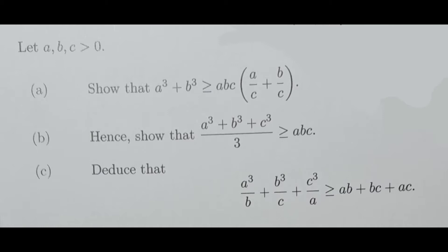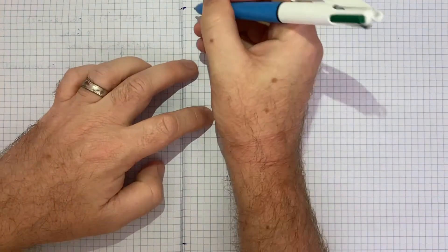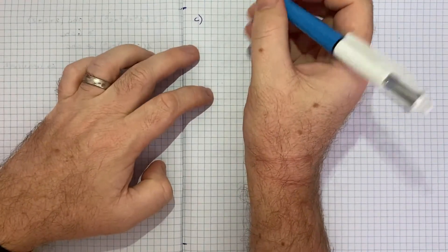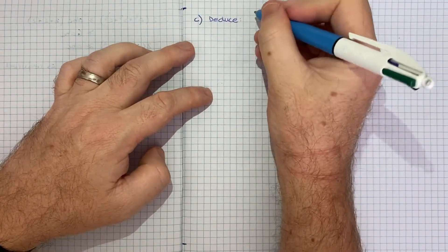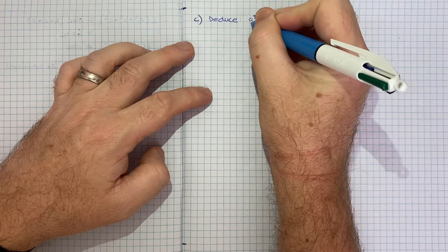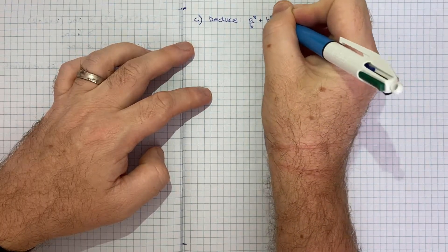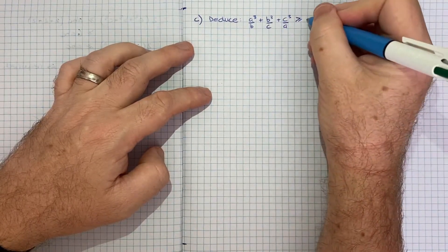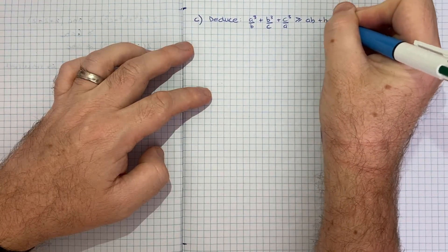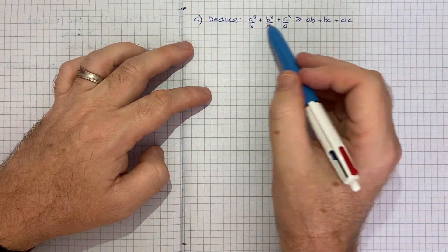Part C tells us to deduce that A cubed on B plus B cubed on C plus C cubed on A will be greater than or equal to AB plus BC plus AC, remembering that A, B and C are all greater than 0. I'll start by writing out what we're trying to get to. We want to deduce that A cubed on B plus B cubed on C plus C cubed on A is greater than or equal to AB plus BC plus AC.